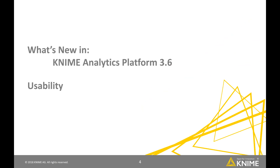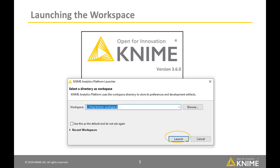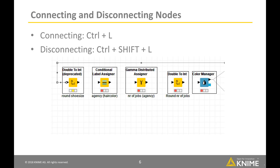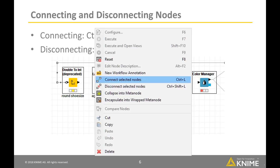Let's have a look at some improvements to usability. The first step is always to launch the workspace, and you can see that now we have a button that says Launch. If you have a bunch of nodes on the editor and you like to connect all of them, now you can do that with the context menu. Select the nodes you want to connect and select Connect from the context menu, or press Ctrl plus L.